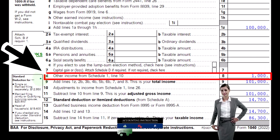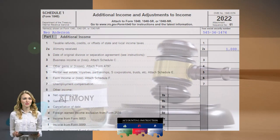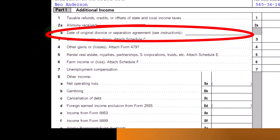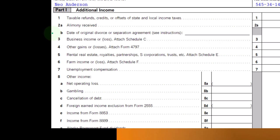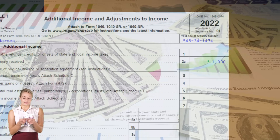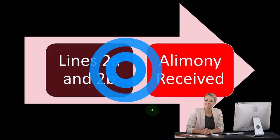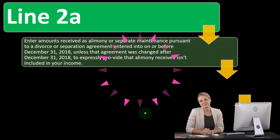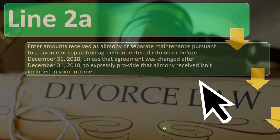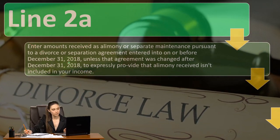On the first page of the tax return, line 8 — other income from Schedule 1 — and here is Schedule 1. If you had to include the alimony, it would be here: alimony received. Notice down below they have the date of the original divorce or separation agreement, which is necessary because of the cutoff date. Lines 2a and 2b, alimony received: enter amounts received as alimony or separate maintenance pursuant to a divorce or separation agreement.